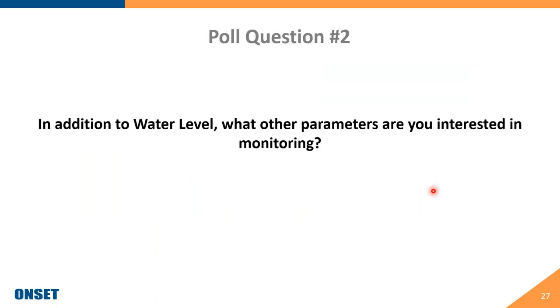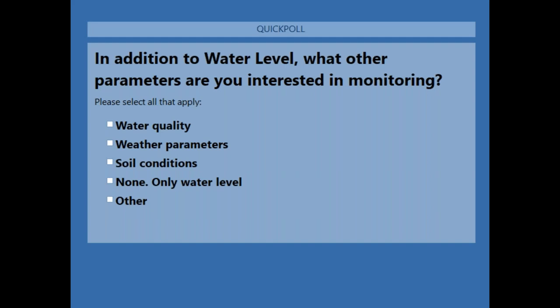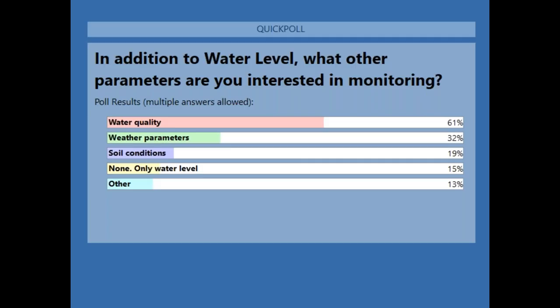That covers the U20 loggers in water level monitoring applications. A second poll asked attendees whether they're interested in monitoring other parameters beyond water level. Results show water quality is the top interest, followed by weather parameters and soil conditions — a good mix relevant to these site types.